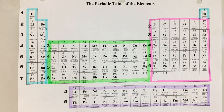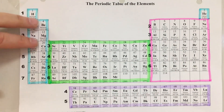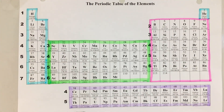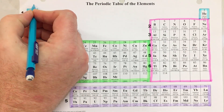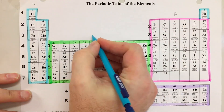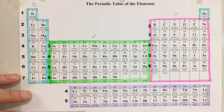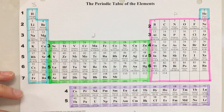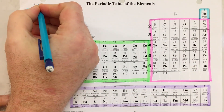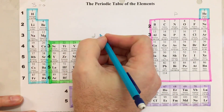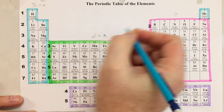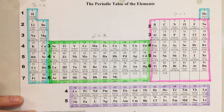The second quantum number tells us the shape of the orbital, which is either going to be s, p, d, or f. If we look at our periodic table, this is our s block, this is our p block, this is our d block, and this is our f block. Each of these corresponds to a number: zero corresponds to s, 1 corresponds to p, 2 corresponds to d, and 3 corresponds to f.